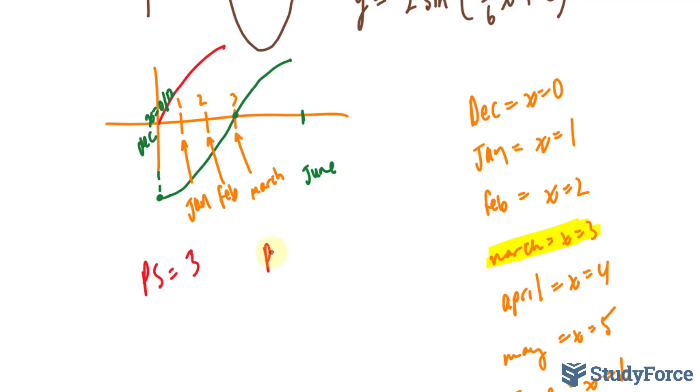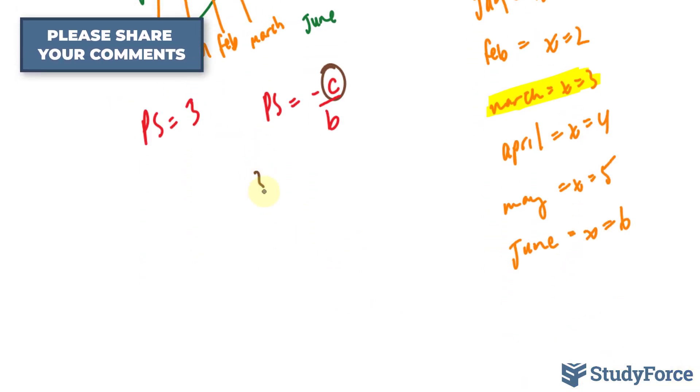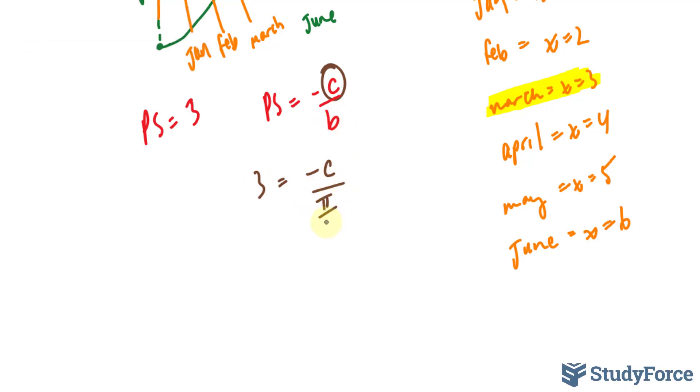And we'll use the formula phase shift = -c/b to find the last letter we're looking for. So we have 3 = -c, and remember b was equal to π/6.